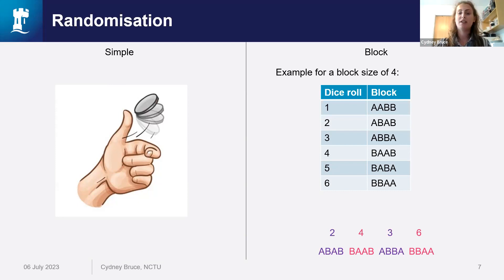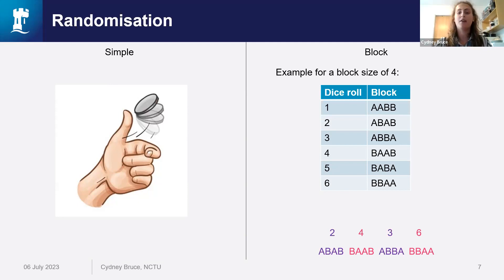Starting with simple randomisation, this is considered the original method and works essentially on the flip of a coin. For each allocation, the chance of receiving each treatment is around 50-50, and it's entirely unpredictable. It does have the drawback that by chance groups could end up being uneven — if you flip a coin 20 times, it's entirely possible to get 19 heads and one tail — and there's no guarantee that characteristics would be balanced between groups either. This is obviously quite extreme, and the method is fairly safe for large sample sizes.